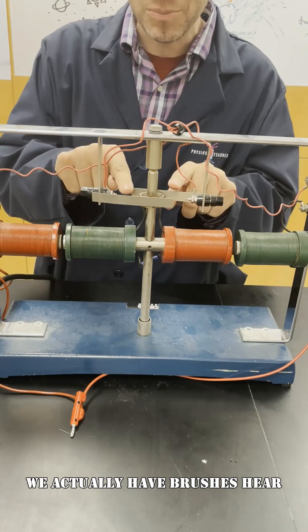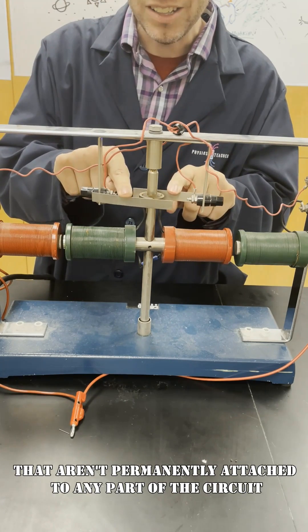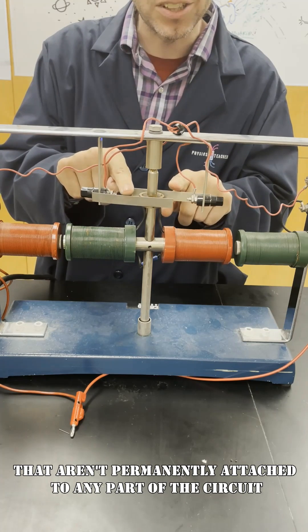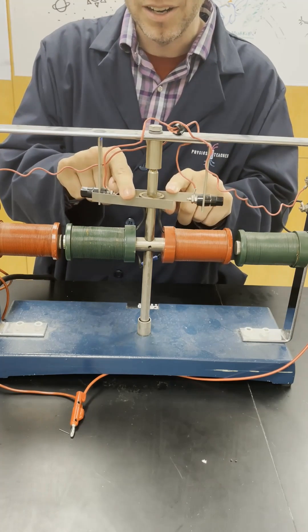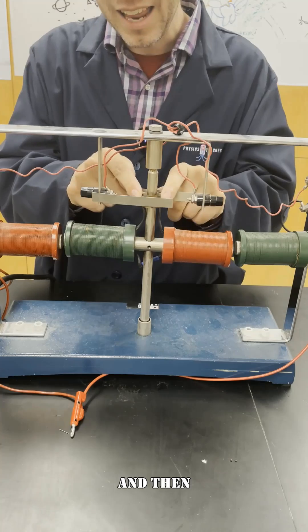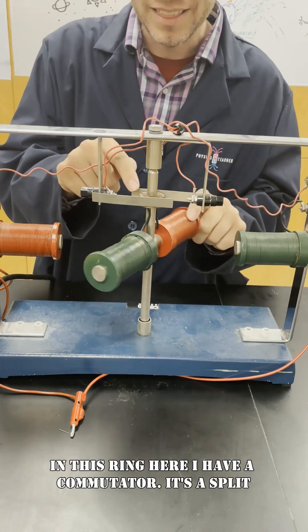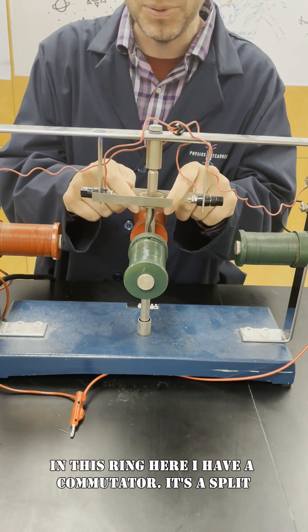To do that we actually have brushes here that aren't permanently attached to any part of the circuit. And then in this ring here I have a commutator. It's a split.